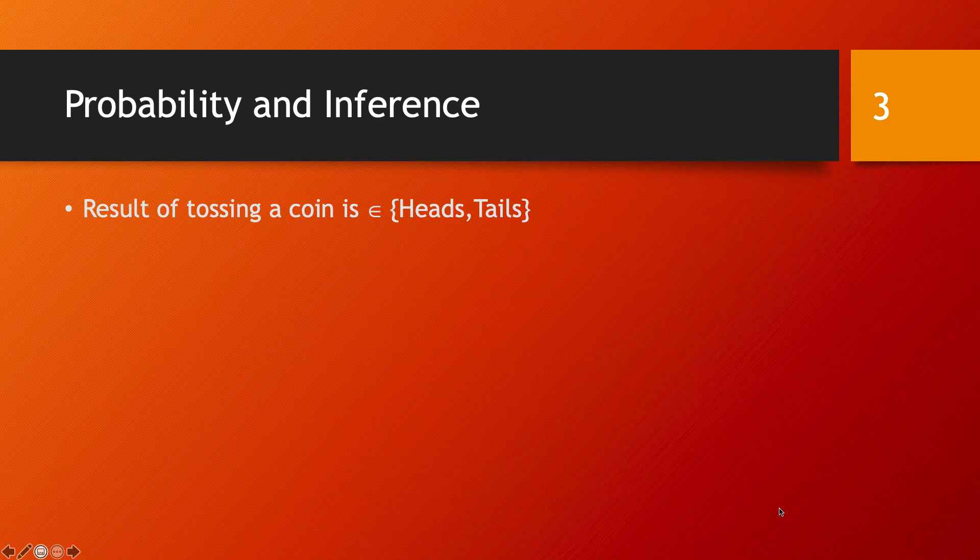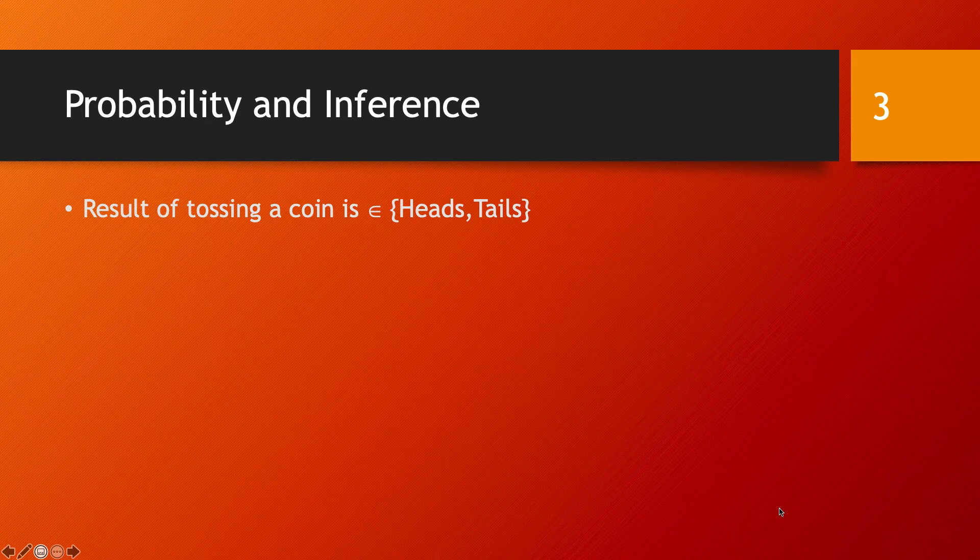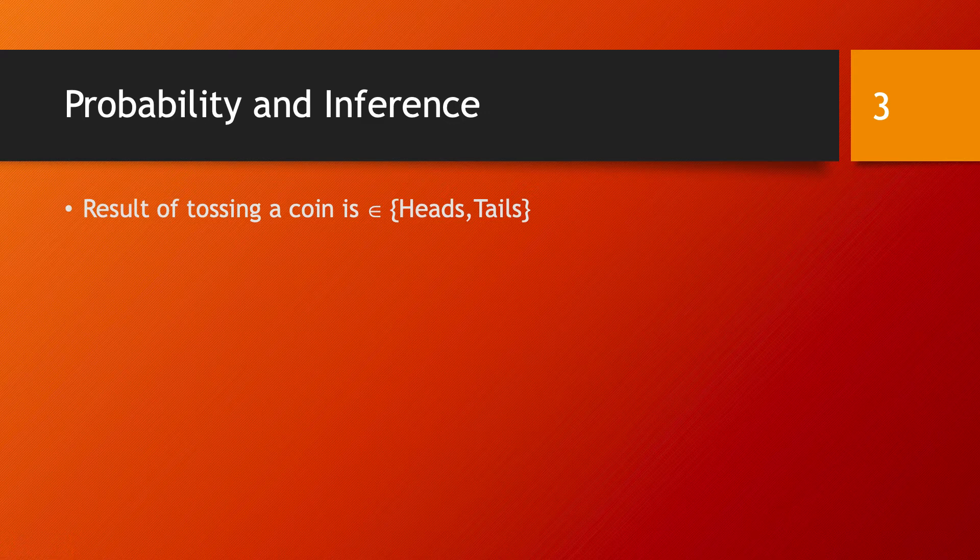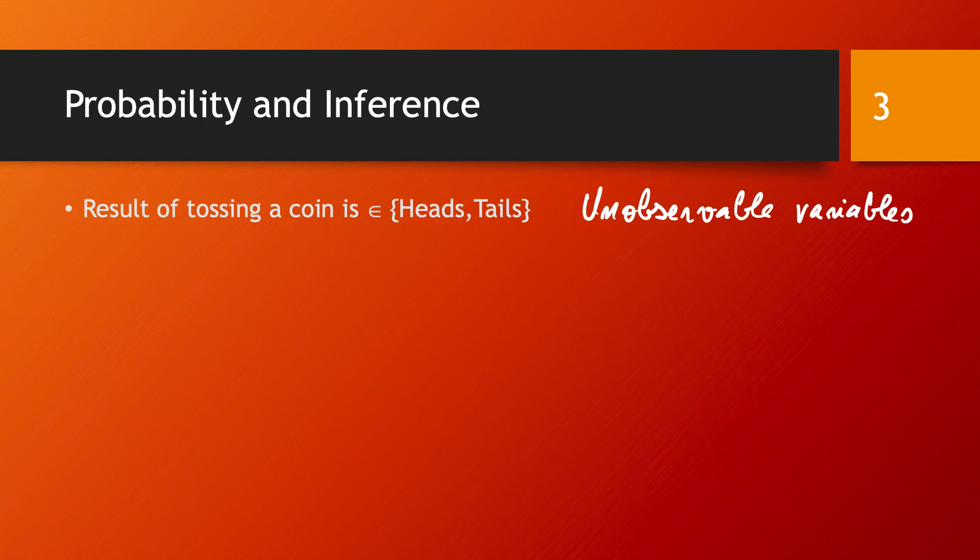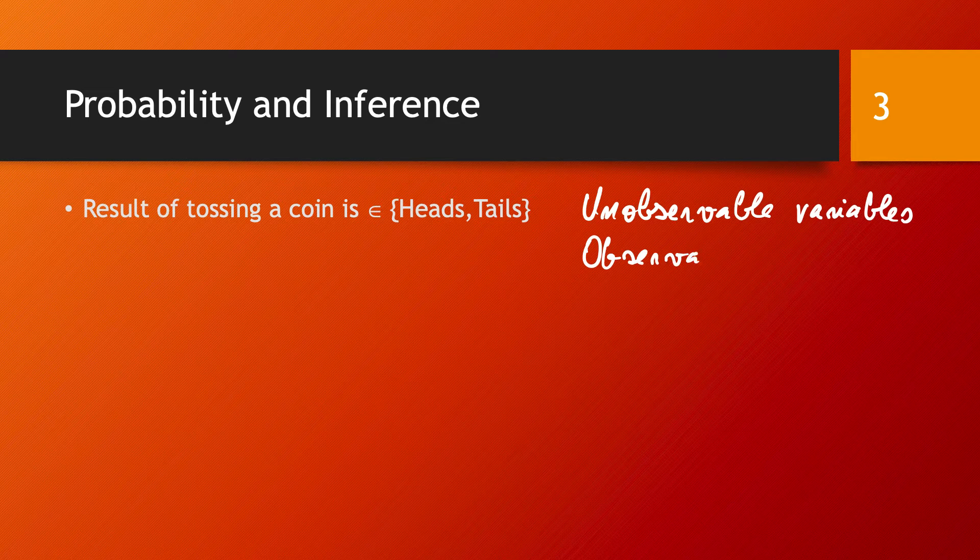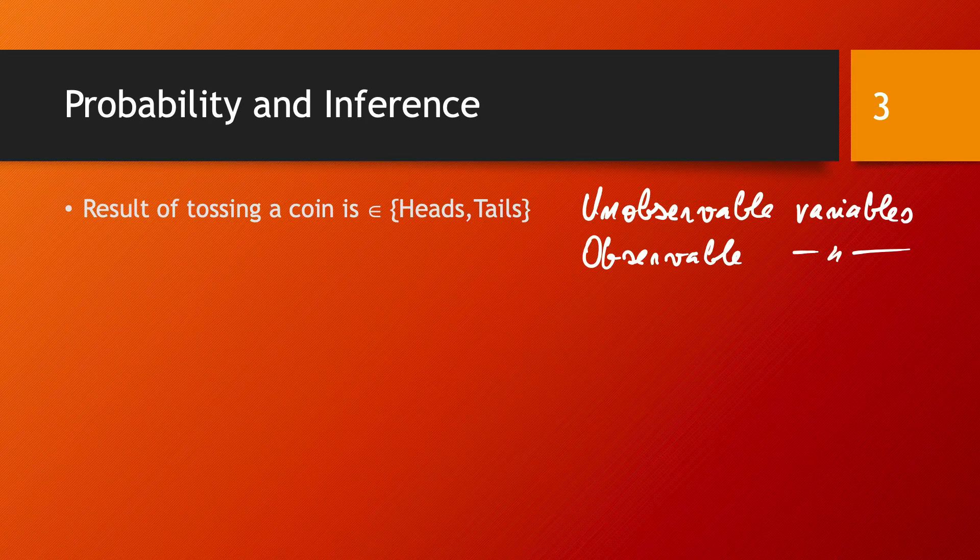But the trouble is that we typically don't have access to such knowledge, and we talk about unobservable variables. We also talk about observable variables. In our example, the only observable variable is the outcome of the toss.